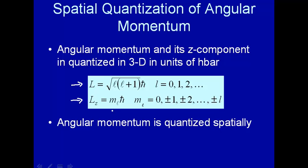So the maximum value of m_L depends on what L is. So these two quantities, the fact that the total angular momentum is quantized and the z component of the angular momentum is quantized, means that angular momentum is quantized spatially. Let's just see that.